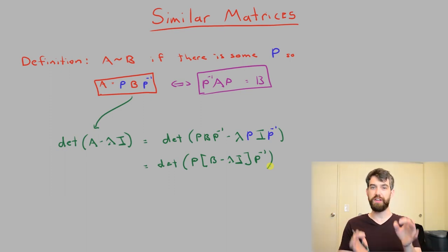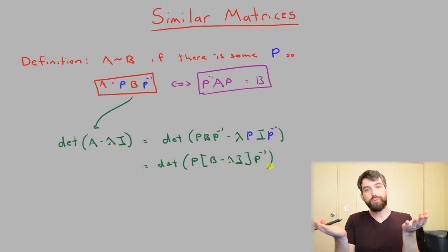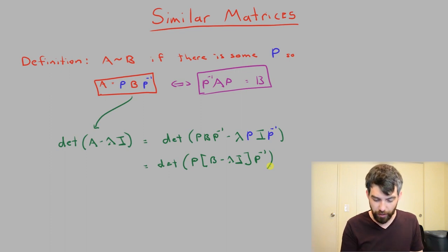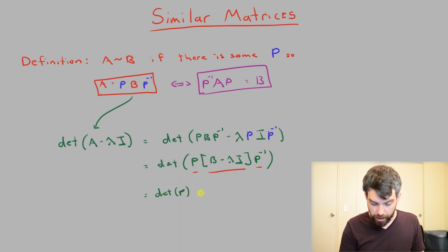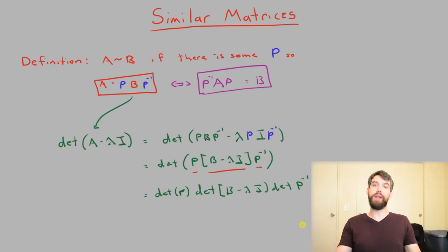Now I'm going to use a convenient fact about determinants. The determinant of a product is the product of the individual determinants. This is a determinant really of three things: a P, this B minus lambda I, and this P inverse. So I'm going to write it that way. I'm going to say it's the determinant of P, the determinant of B minus lambda I, and the determinant of P inverse.